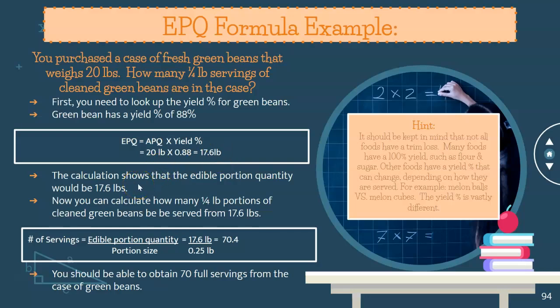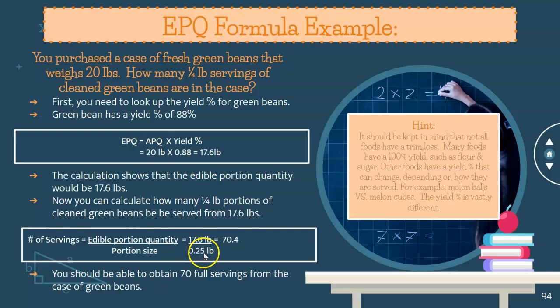The calculation shows that the edible portion quantity is 17.6 pounds. Now calculate the actual portions — each portion is a quarter pound of clean green beans. To find the number of servings, divide the edible portion by the portion size: 17.6 divided by 0.25 equals 70.4. So you should be able to obtain 70 full portions from the case of green beans.